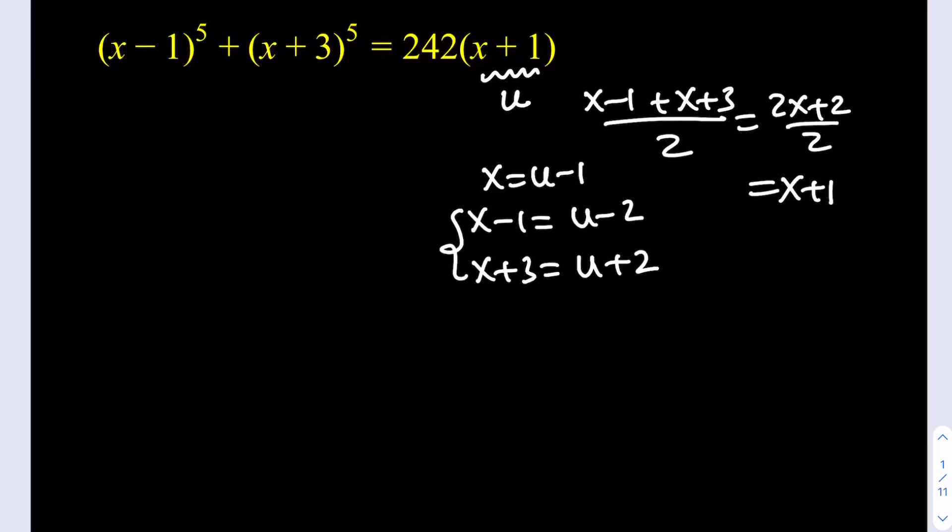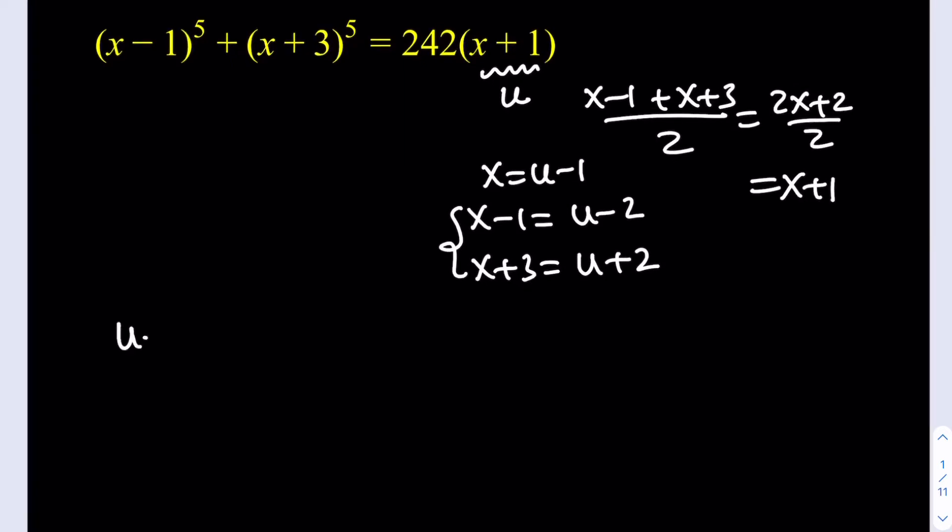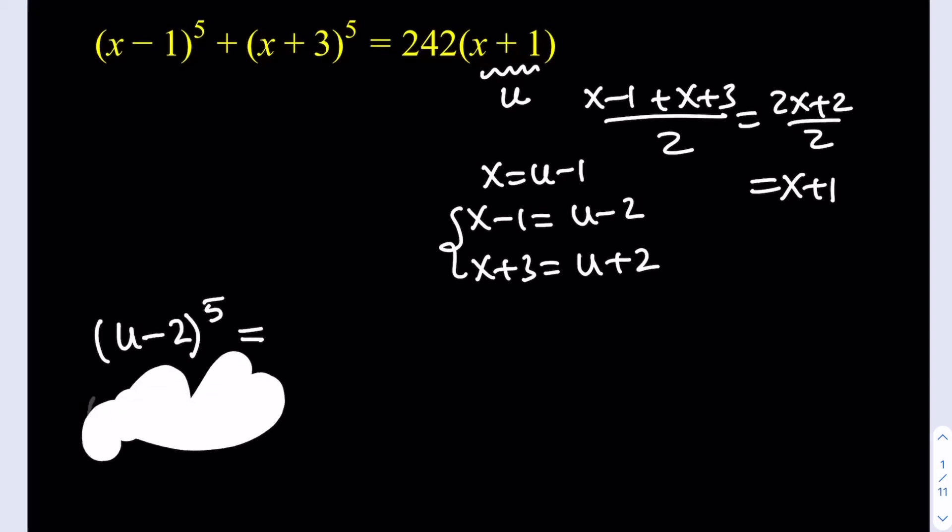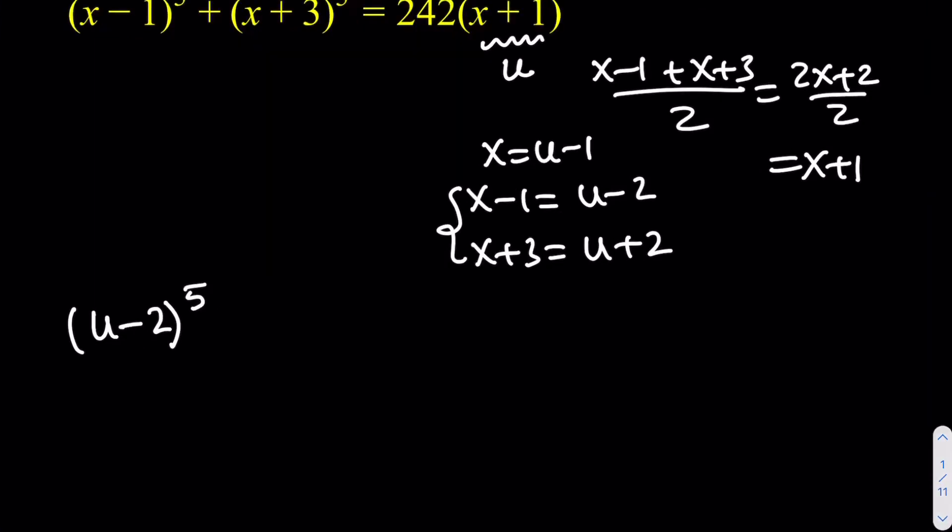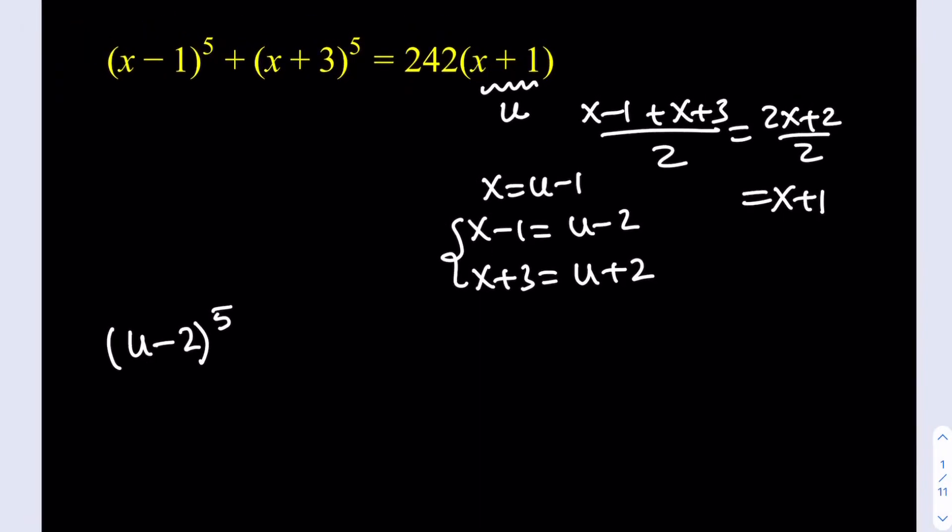Here's how we're going to use the substitution. We're going to call x+1 as u, and then we're going to be writing everything else in terms of u. So if x+1 is u, that means x is equal to u-1. From here, x-1 is going to be u-2. And x+3 is going to be u+2. Now, once you make the substitution, you're going to be getting (u-2)^5 plus (u+2)^5 equal to 242u.